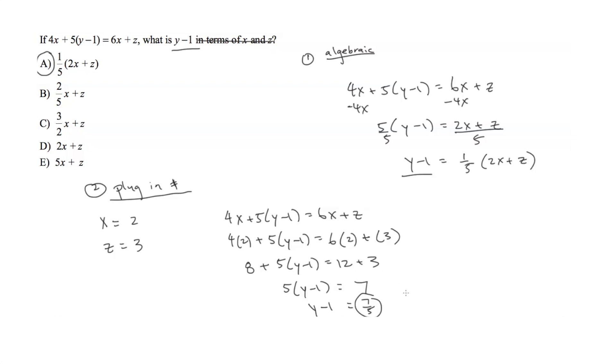Now what this means, this is our critical value or basically our target number, if you will. So we want one of these to equal seven-fifths. So what we're going to do is we're going to plug in the same exact x and z values into these answer choices, A through E, and see which one gives us the value of 7 over 5.